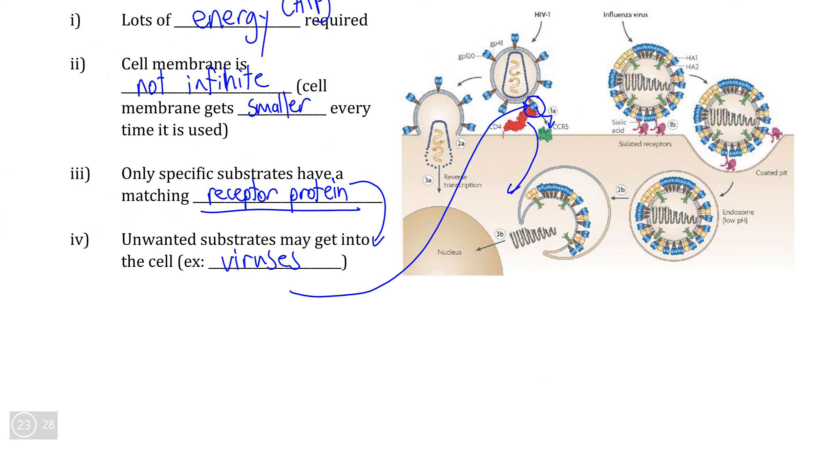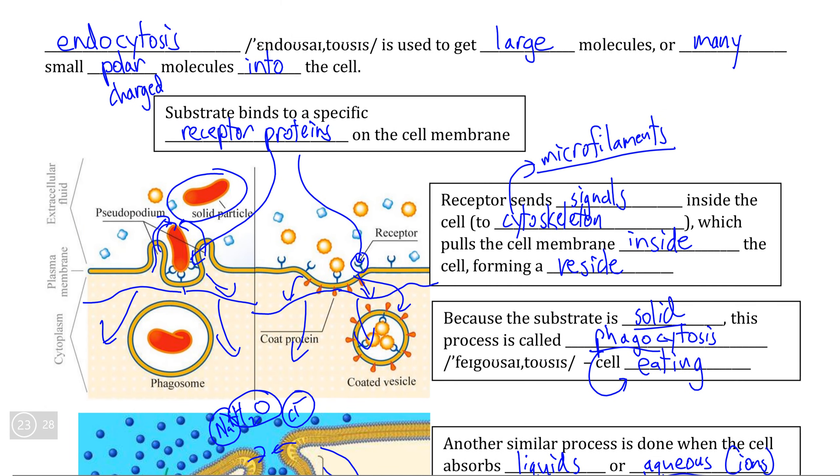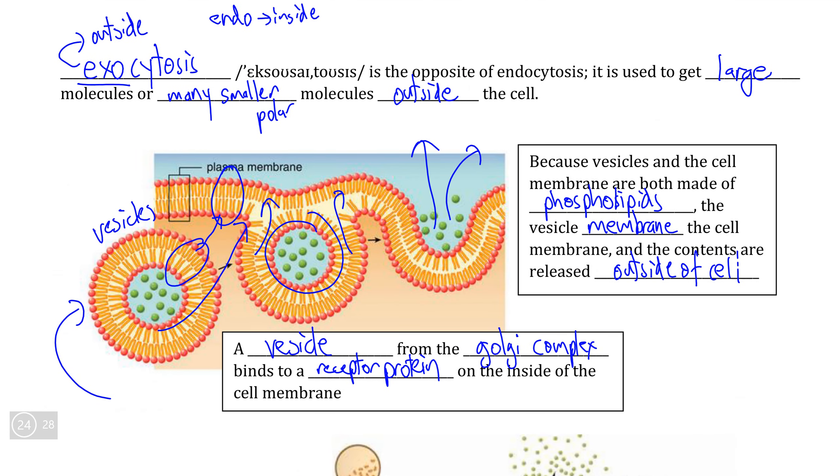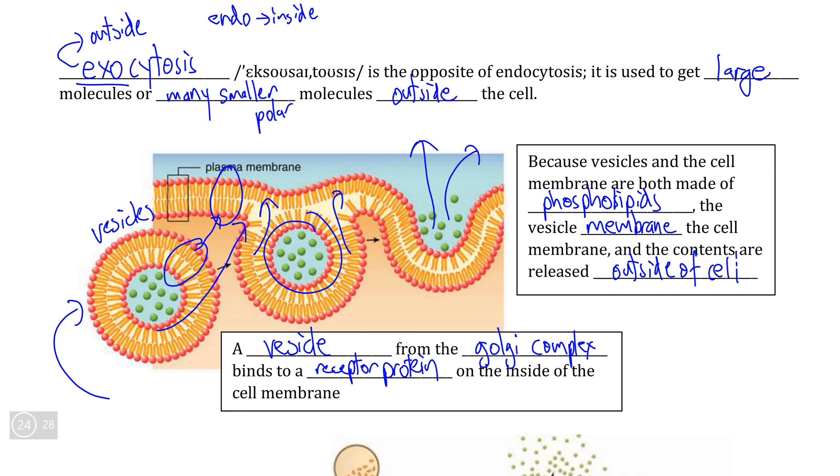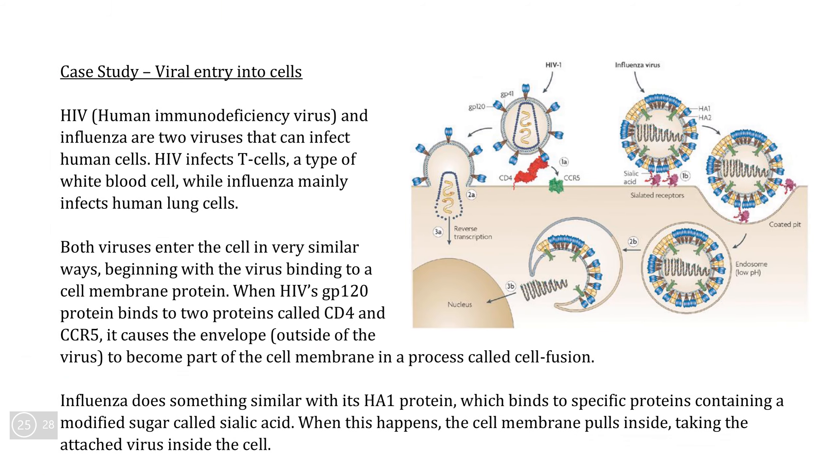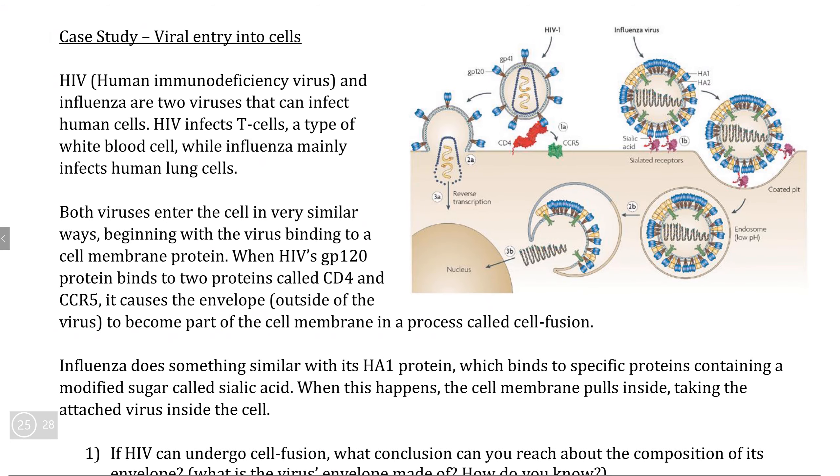This concludes our series on advanced membrane proteins and advanced methods of membrane transport. So to test your knowledge of endo- and exocytosis, you can take a look at this case study in which we actually look in detail about how viruses trick the cell and use the process of phagocytosis to get into the cell and exocytosis in order to export their offspring outside of the cell.